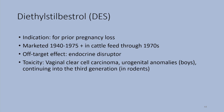Another disaster was diethylstilbestrol (DES), indicated for prior pregnancy loss on the theory that increasing maternal estrogen would reduce pregnancy loss. Marketed between 1940 and 1975 and present in cattle feed in the U.S. through the 1970s, DES acted as an endocrine disruptor. In 1971, unusual reports of vaginal clear cell carcinoma appeared in women whose mothers had received DES during pregnancy. DES also causes urogenital anomalies in boys, and in rodent models these abnormalities persist through the third generation.